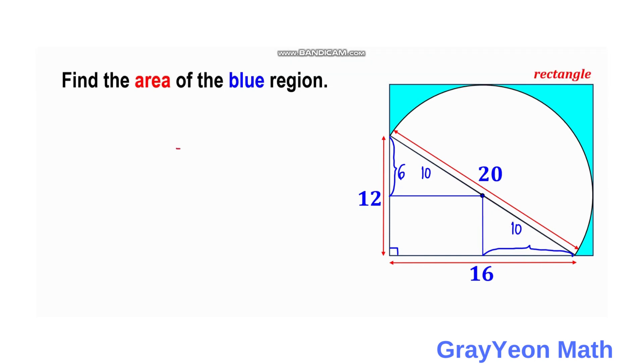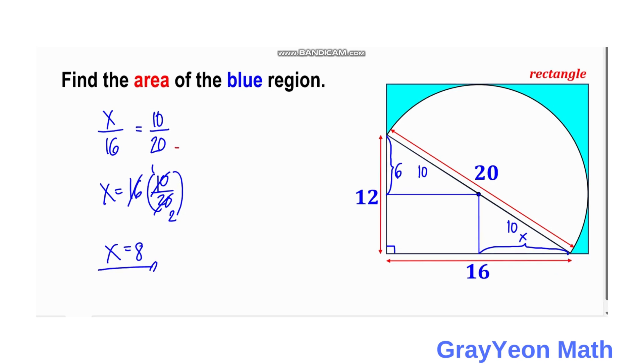So x over 16 minus x is equal to 10 over 20. So x equals 16 times 10 over 20, which is equal to one-half, and x equals 8. So that length is equal to 8 units.